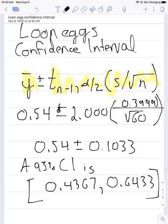Here we can say 95% confidence interval for the mercury content in Loon eggs is between 0.4367 and 0.6433.